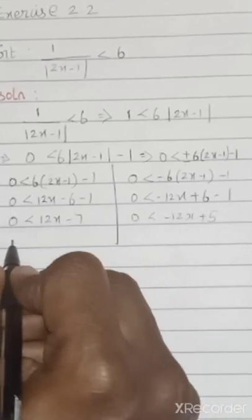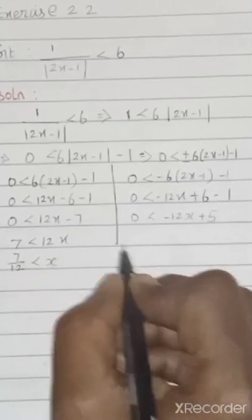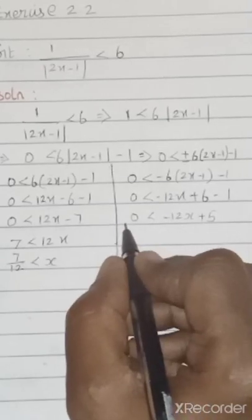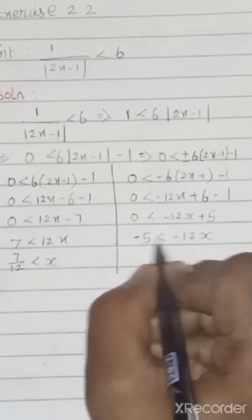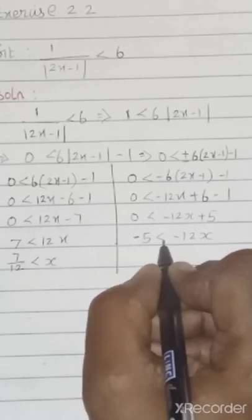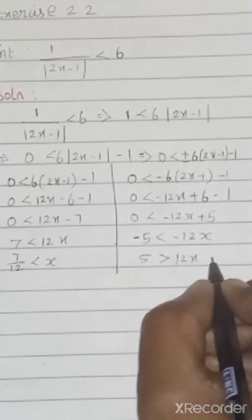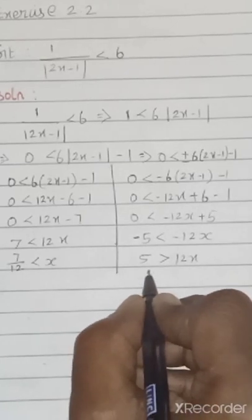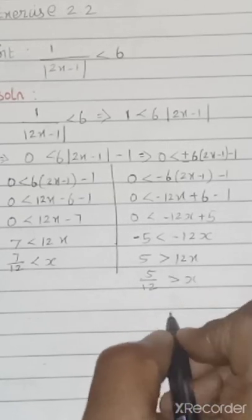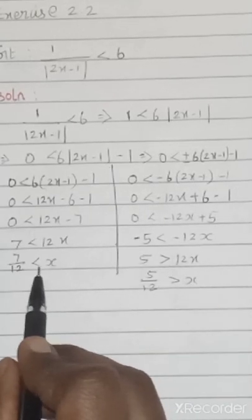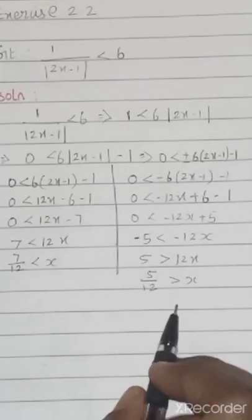Taking 7 to this side gives 7 < 12x, so 7/12 < x. Similarly, for the minus case, take minus 5 to this side: −5 < −12x. To remove the minus value you change the inequality, so this becomes 5 > 12x, giving 5/12 > x. So the x values are: x > 7/12 and x < 5/12.